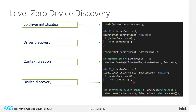Here is a piece of code showing how you query for a device, how you create a context, and how you query for device handles. Usually you start with a ZInit call that initializes the whole system, then continue with ZDriverGet, ZContextCreate, ZDeviceGet, etc. For simplicity we are not showing error control, but each of these calls returns an error code you can query to know if the call succeeded.